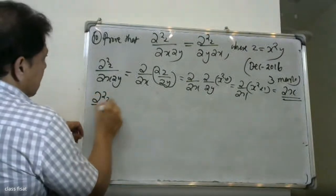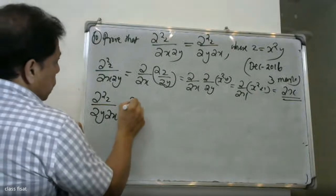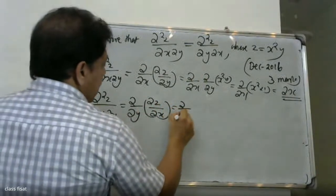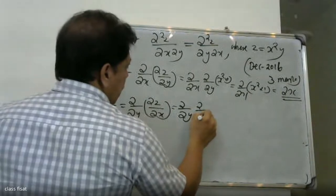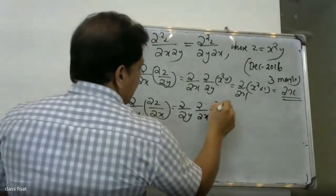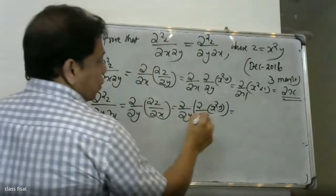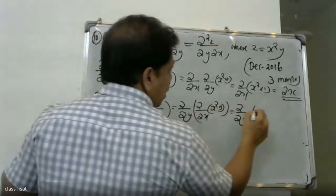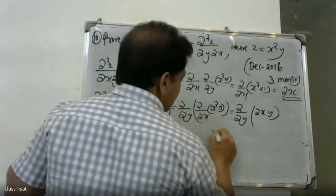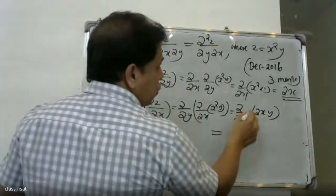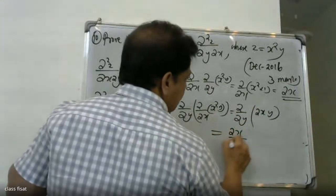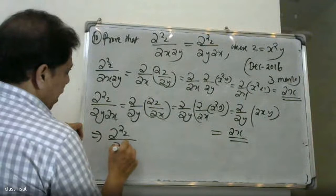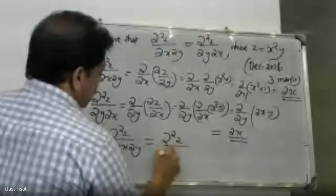Now dou square z by dou y dou x equals dou by dou y of dou z by dou x. That is dou by dou y of dou by dou x of x square y. Differentiating with respect to x: y is constant, x square differentiate gives 2x, so we get 2xy. Then dou by dou y of 2xy: x is constant, y differentiate gives 1, result is 2x. Therefore dou square z by dou x dou y equals dou square z by dou y dou x.